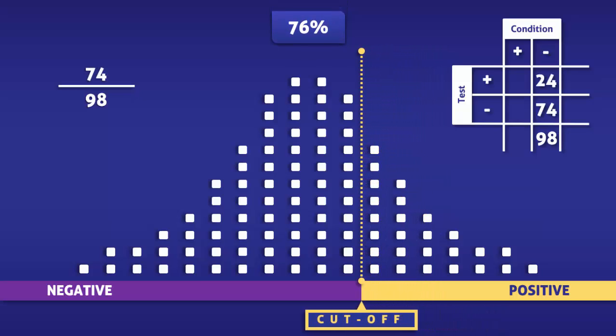Shifting the cutoff level for a positive test towards the left, that is, closer towards the normal value, increases the number of false positives. This means that the condition would be detected in a greater percentage of patients that do not have it, and thus the specificity of the test would be lower.